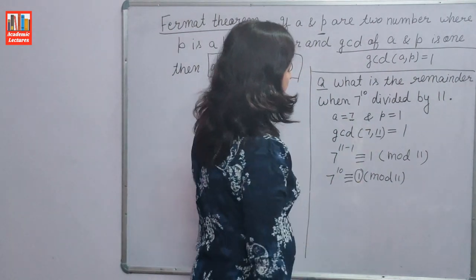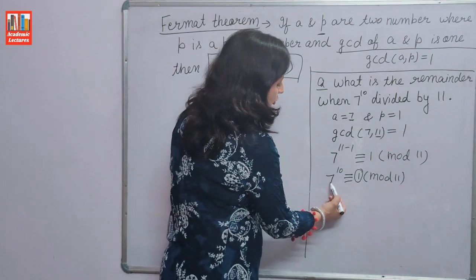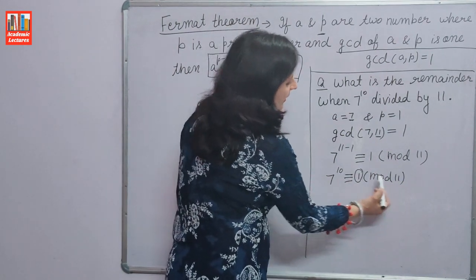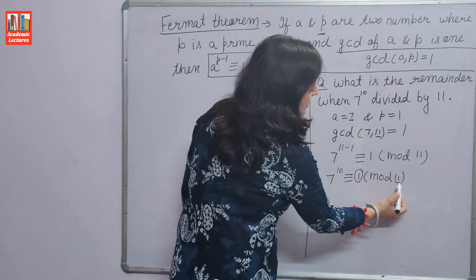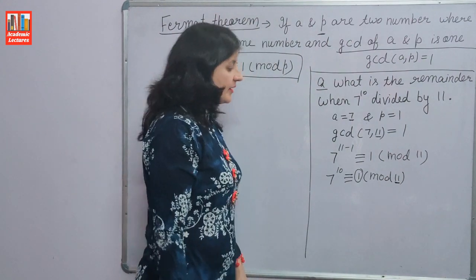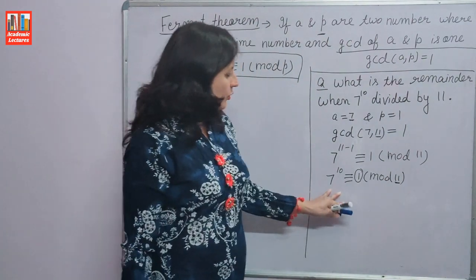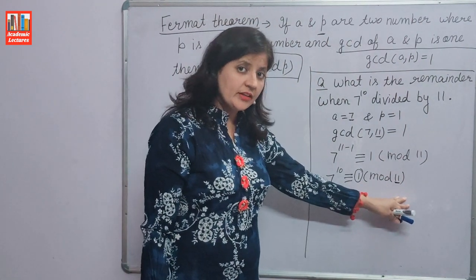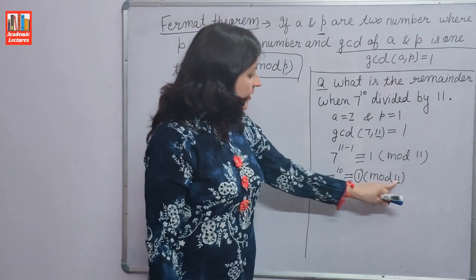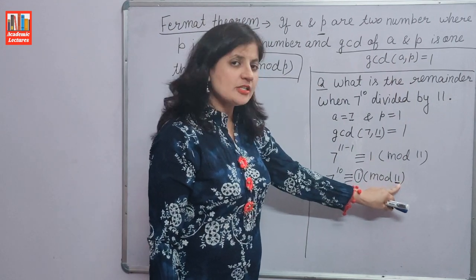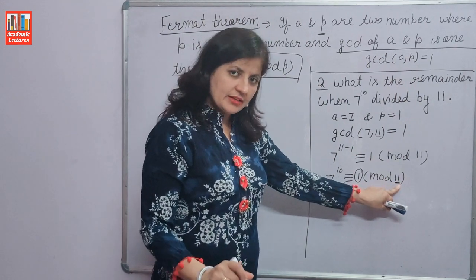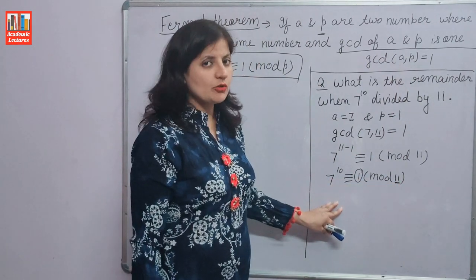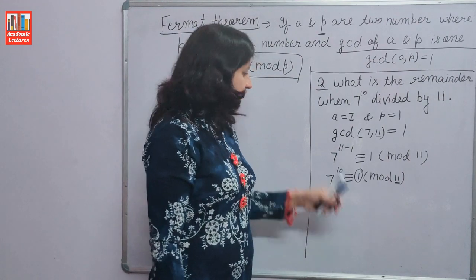Here we need to note that the power of the number is 1 less than P, the GCD of both numbers is 1, and the power is 1 less than the prime number. So Fermat's theorem is what we need to use.